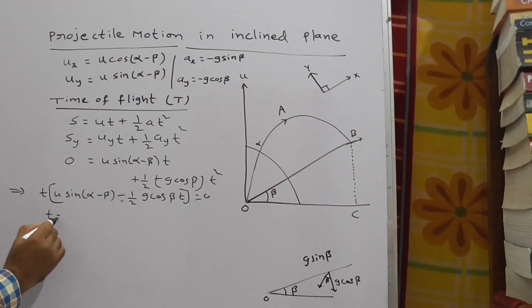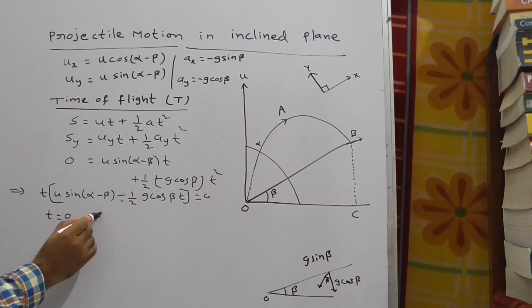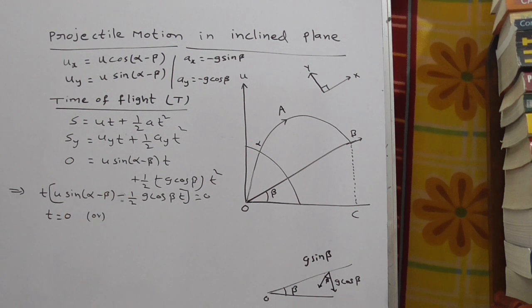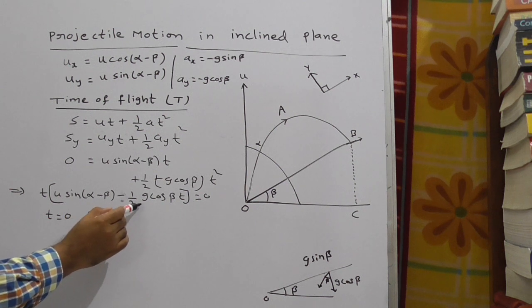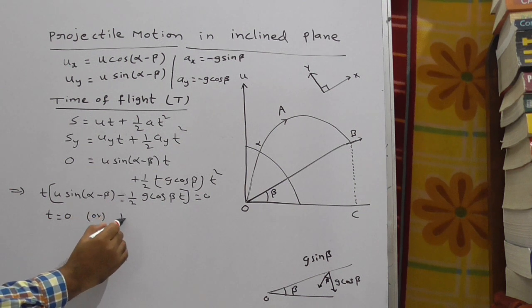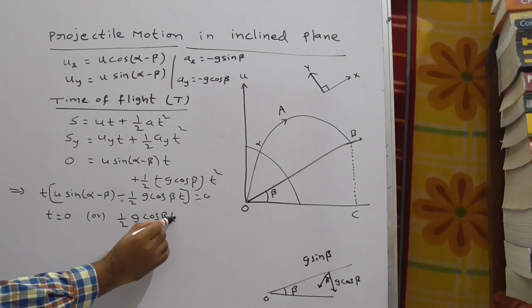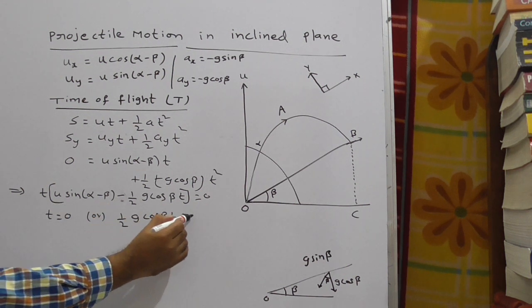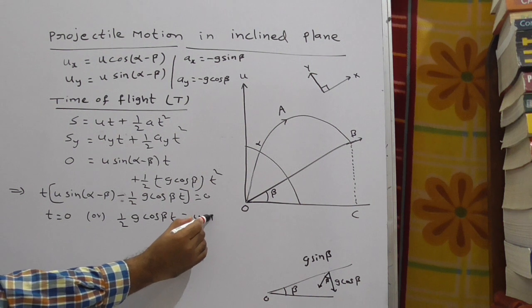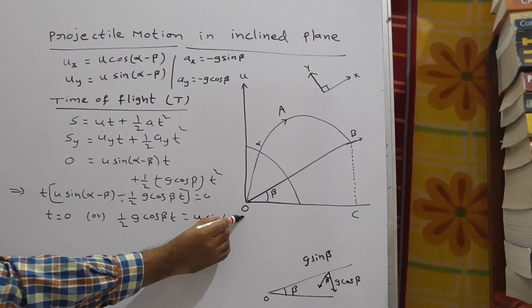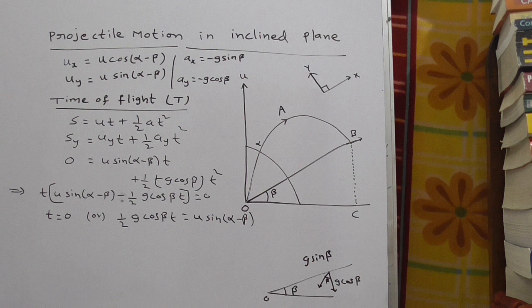Now, t is equal to 0 or this whole thing is 0. Either t is 0 or the bracket value is 0. Here, if it is 0, you can write it as 1 by 2 g cos beta t is equal to u sin(alpha minus beta).